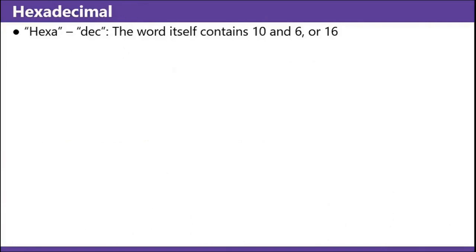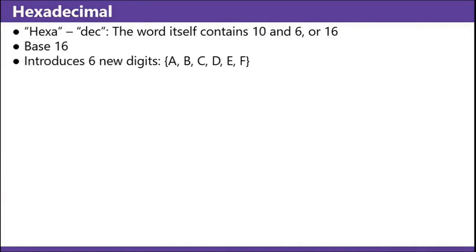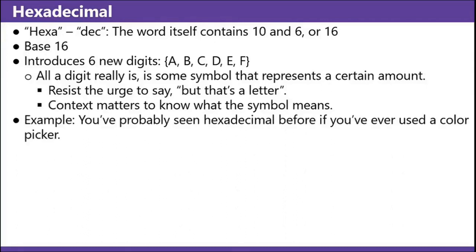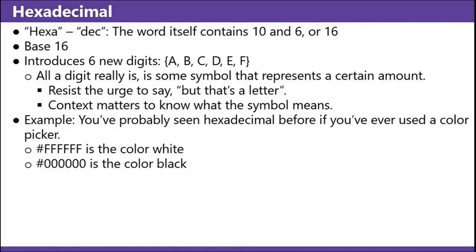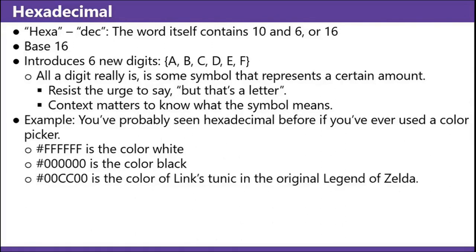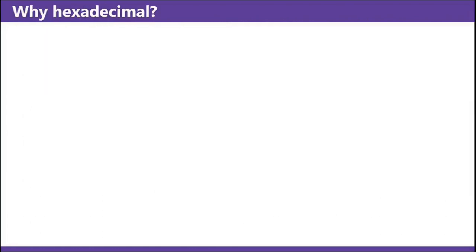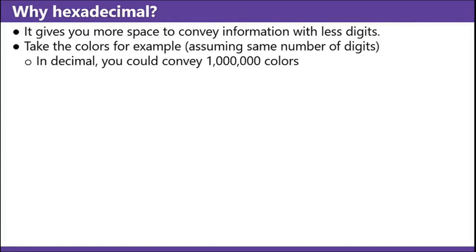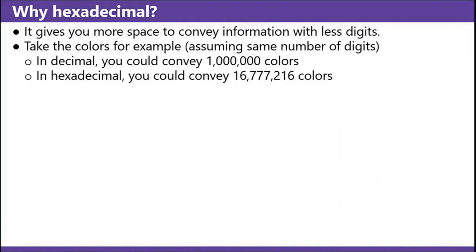Hexadecimal — hex and deca: the word itself contains 10 and 6, or 16. Base 16 introduces six new digits: A, B, C, D, E, and F. All a digit really is, is some symbol that represents a certain amount — resist the urge to say 'but that's a letter'; context matters to know what the symbol means. You've probably seen hexadecimal before if you've ever used a color picker. Hashtag FFFFFF is the color white, hashtag 000000 is the color black, hashtag 00CC00 is the color of Link's tunic in the original Legend of Zelda. Why hexadecimal? It gives you more space to convey information with less digits. In decimal, you could convey a million colors — 10 to the 6. In hexadecimal, you could convey 16,777,216 colors — 16 to the sixth power.